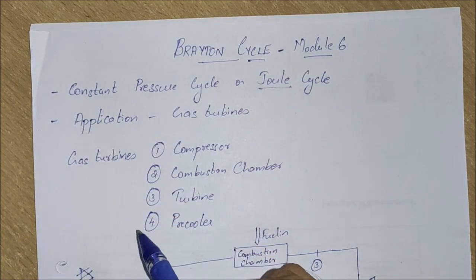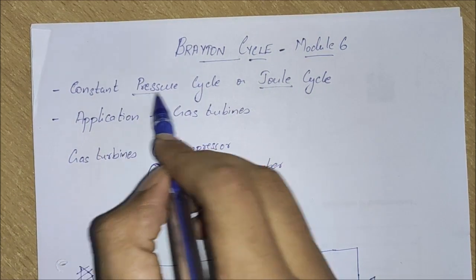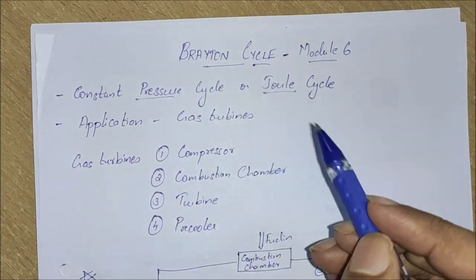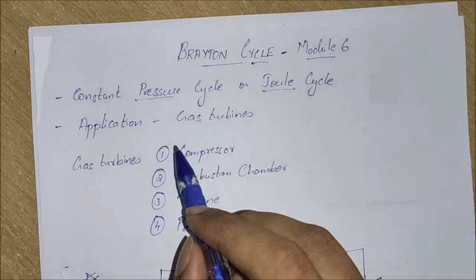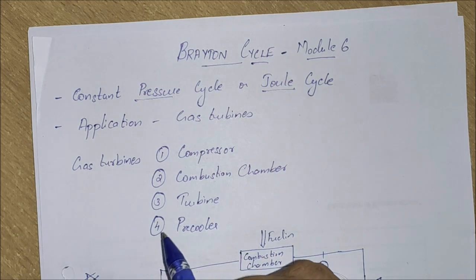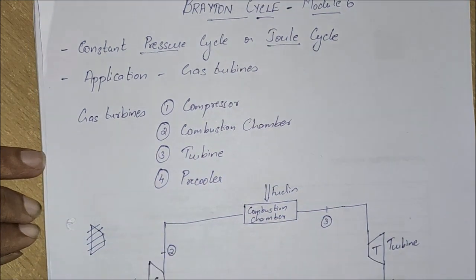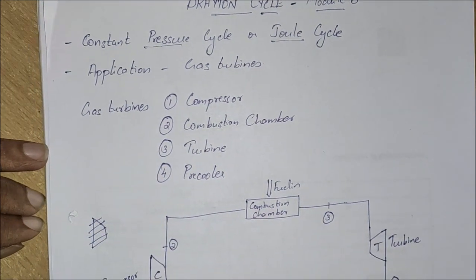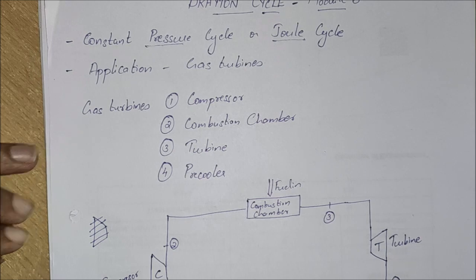The Brayton cycle is also known as a constant pressure cycle or a Joule cycle. The application of this Brayton cycle is in gas turbines. Gas turbines are of two types: the first one is the open cycle gas turbine and the second one is the closed cycle gas turbine.